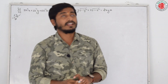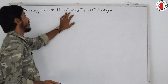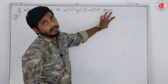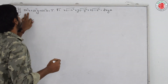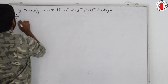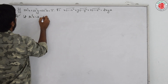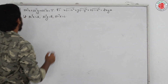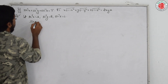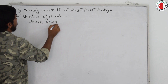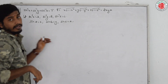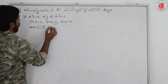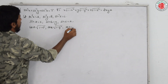Shall we move to the next problem? Given sin inverse x plus sin inverse y plus sin inverse z equals pi, prove that x under root 1 minus x square plus y under root 1 minus y square plus z under root 1 minus z square equals 2xyz. Let sin inverse x equal A, sin inverse y equal B, sin inverse z equal C. So sin A is x, sin B is y, sin C is z. And cos A is under root 1 minus x square, cos B is under root 1 minus y square, cos C is under root 1 minus z square.